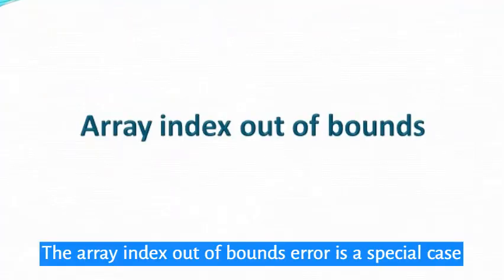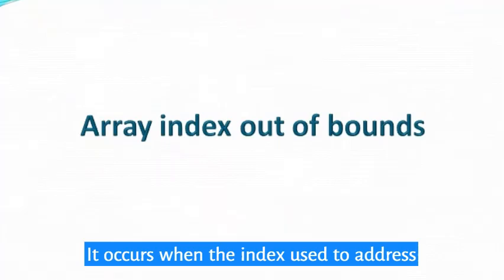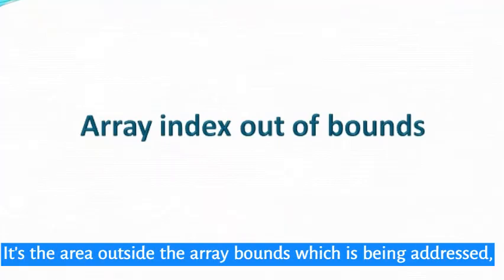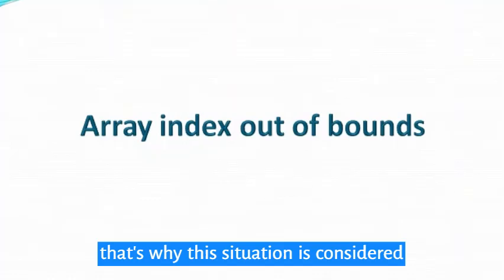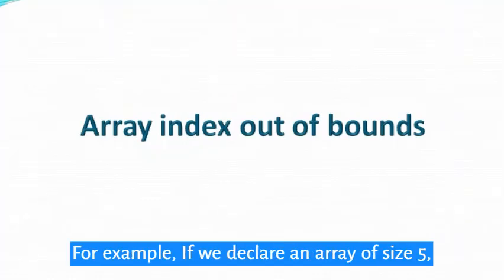The array index out of bounds error is a special case of the buffer overflow error. It occurs when the index used to address array items exceeds the allowed value. It's the area outside the array bounds which is being addressed. That's why this situation is considered a case of undefined behavior. For example, if we declare an array of size 5, then the array will contain elements from index 0 to 4.